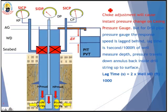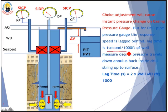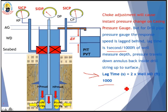Last but not least: choke adjustment will cause an instant pressure gauge change on the choke gauge, but for drillpipe pressure the lag time is one second per one thousand feet of the well's measured depth. The total lag time will be two times the well measured depth in feet divided by one thousand. So be patient after you adjust the choke — wait for the lag time to see the reaction on the drillpipe pressure gauge.